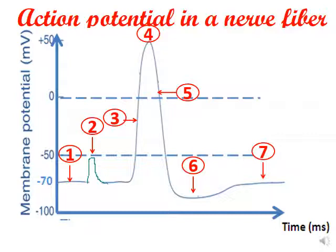Phase one represents the resting potential where no stimulus is applied. Phase two represents the artifact, called hypopolarization — 'hypo' means decrease, so hypopolarization is a decrease in the negativity. Phase three represents depolarization, moving to the positive. Phase four represents the inversion of polarity, moving from the positive down to the negative.